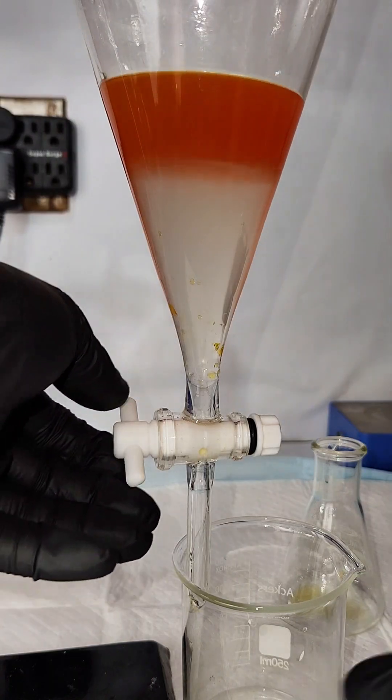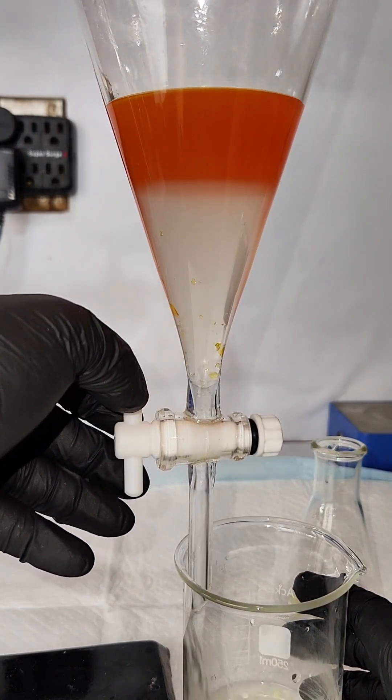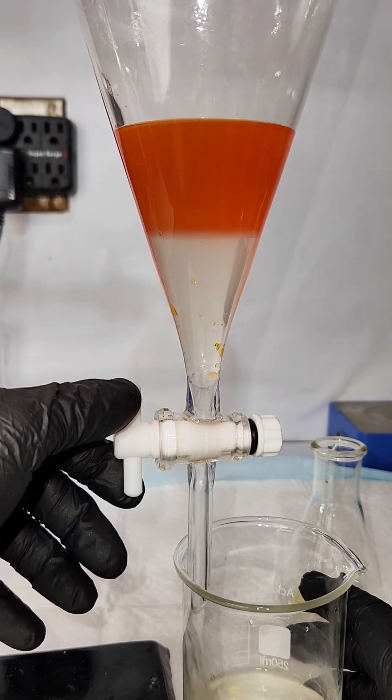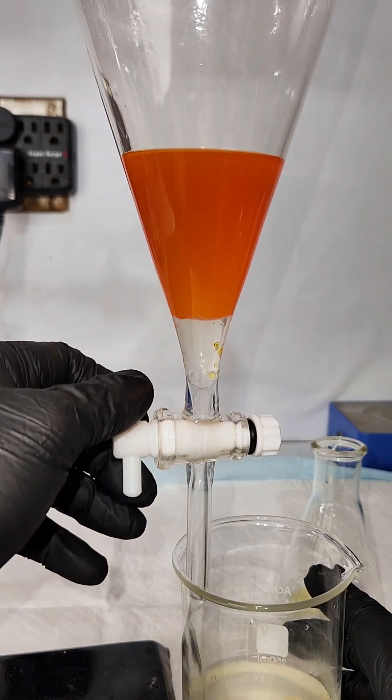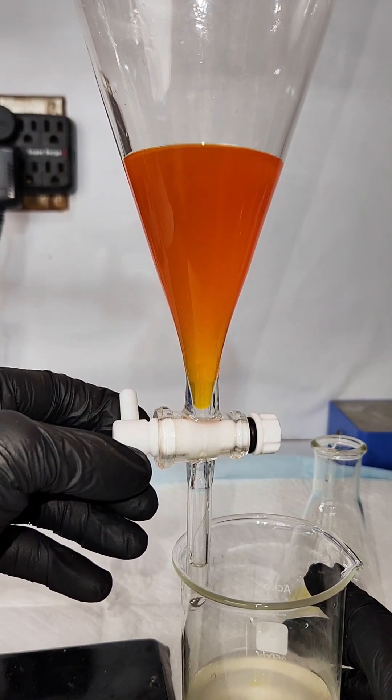When I'm done shaking my separatory funnel, I drain off my lower aqueous layer which does look like it picked up some kind of contamination. I then drain off my upper layer containing my benzene into a small Erlenmeyer flask.